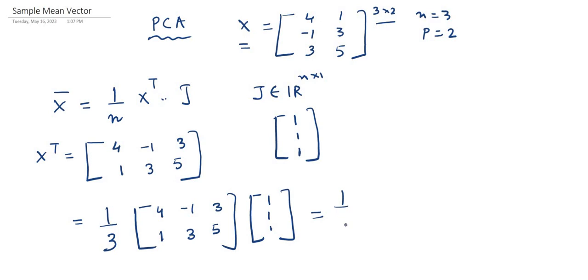So if we do this calculation, 4 times 1 is 4, minus 1 times 1 is minus 1, and then 3 times 1 is plus 3. And the second calculation, again, 1 times 1.